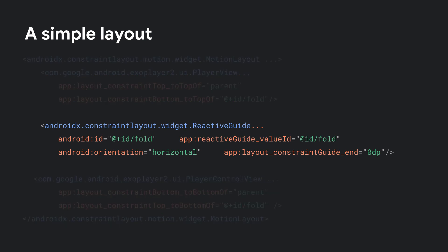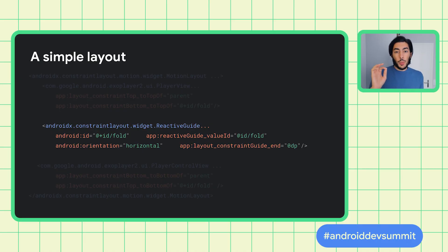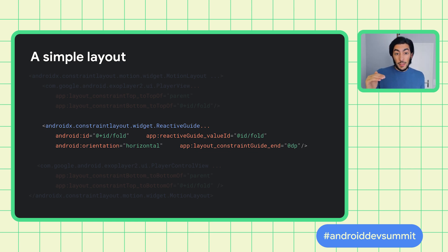There is a new mechanism to inject runtime values using a shared value and a new element called the ReactiveGuide, which is an invisible UI component that positions itself automatically when a shared value changes. Note the attribute layout_constraintGuide_end — this is the value you want to change to move the guideline. Since the ReactiveGuide is horizontal, this attribute represents the distance between the guideline itself and the bottom of the parent.